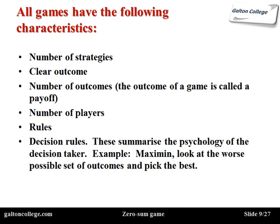And we have a number of decision rules. These summarize, if you like, the psychology of the decision maker. For example, what we call a maxi-min: we look at the worst possible set of outcomes and we pick the best. That's quite a famous decision rule — maxi-min. We look at the worst that the opponents can do, and then we pick the best of the worst. There is also a maxi-max, a regret matrix, and all sorts of decision rules, but generally speaking we pick something like maxi-min. It's quite a common one.